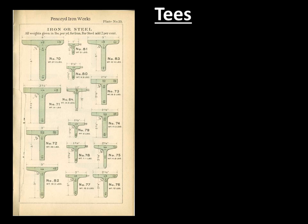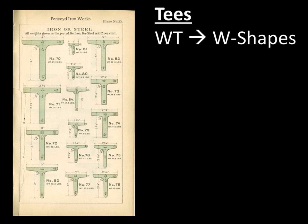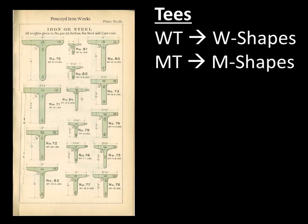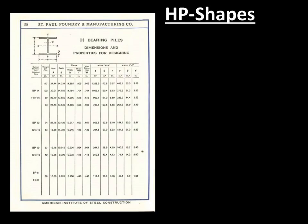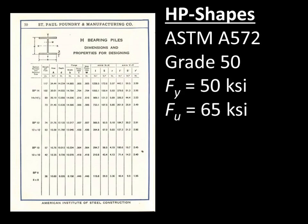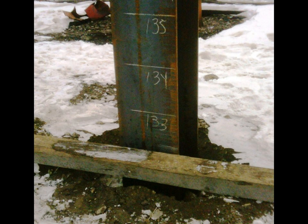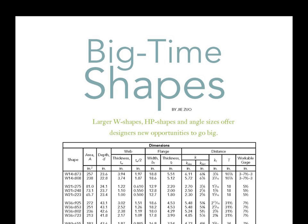T shapes are derived from products already discussed: WT's are split from W shapes, MT's from M shapes, and ST's from S shapes — so we follow the material guidance from the parent product. HP shapes, also called bearing piles, are most commonly A572 grade 50 in the marketplace today. We now have HP 16s and 18s — we used to stop at HP 14s. Further information on the big HP shapes is available in the referenced article.